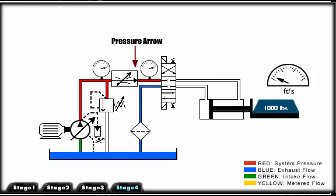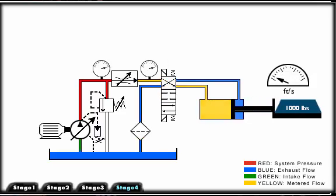Notice that with a pressure compensated flow control valve, the speed of the cylinder does not change with the change in load.